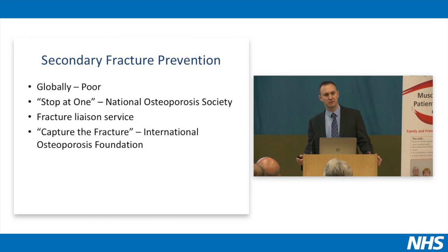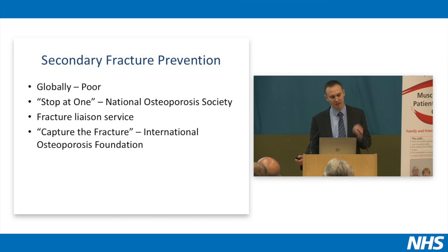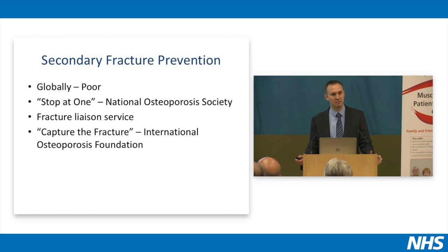It seems fairly straightforward that having a fracture is a big risk factor and we should be assessing all these patients. But globally the health service is very poor at doing this. In this country there are areas that are very good — Portsmouth has a very good service — but there are areas where we're not very good at this. As a result, the National Osteoporosis Society has come up with the campaign Stop at One, raising awareness about the importance of secondary fracture prevention, targeting people who've had a fracture to stop them having more. The best way shown to identify and treat these patients is with a Fracture Liaison Service.